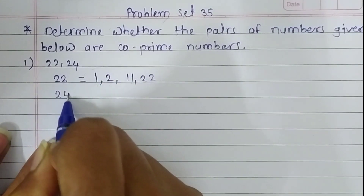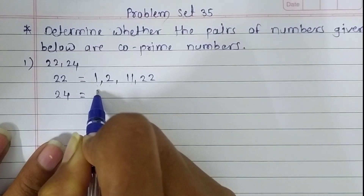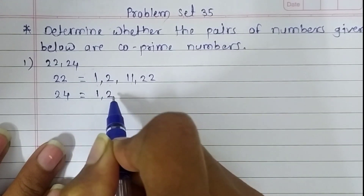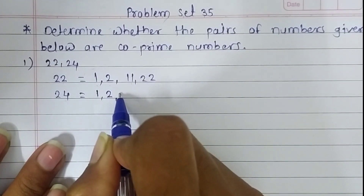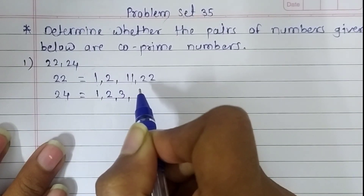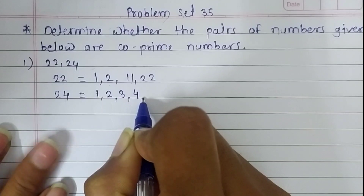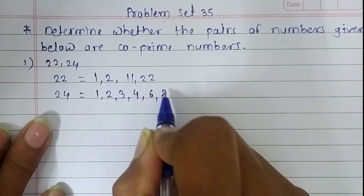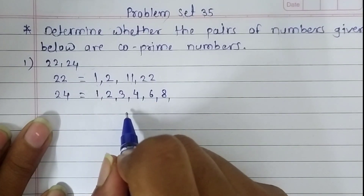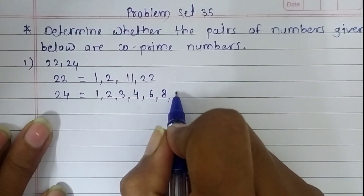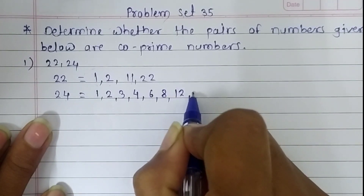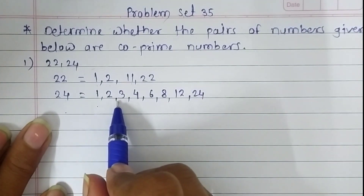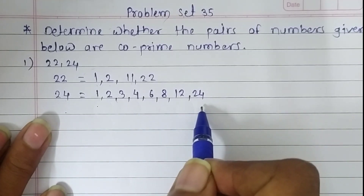Now let's write the factors of 24. The first factor is 1. Since 24 ends in 4, it is in the table of 2. It is also in the table of 3 — 3 eights are 24. So 4, 6, and 8 are also factors. Then 12. The factors of 24 are 1, 2, 3, 4, 6, 8, 12, and 24.